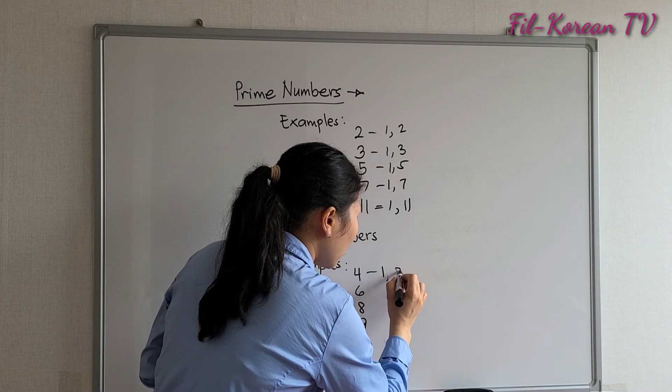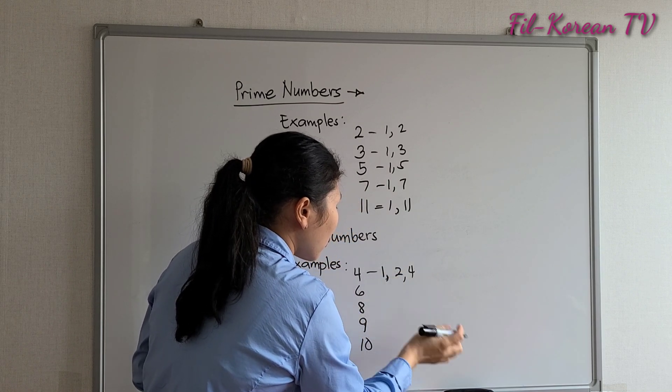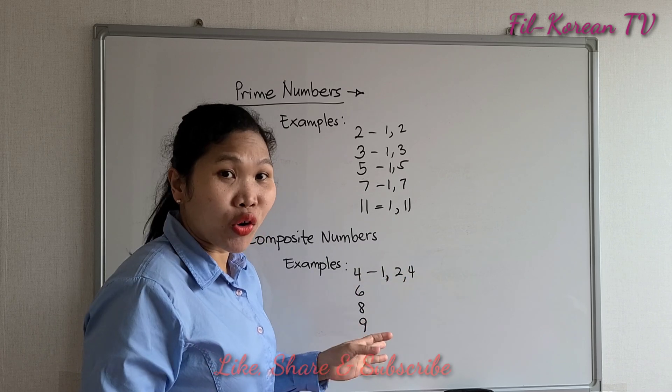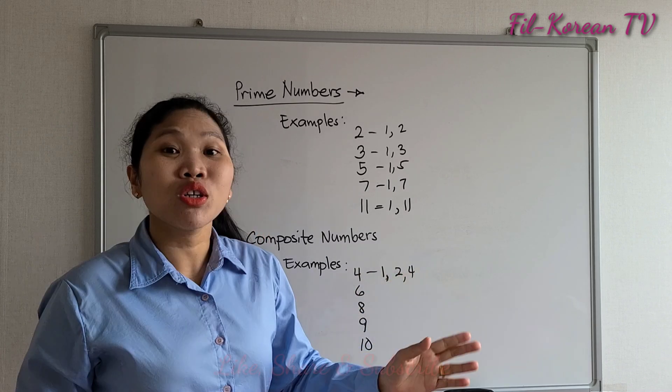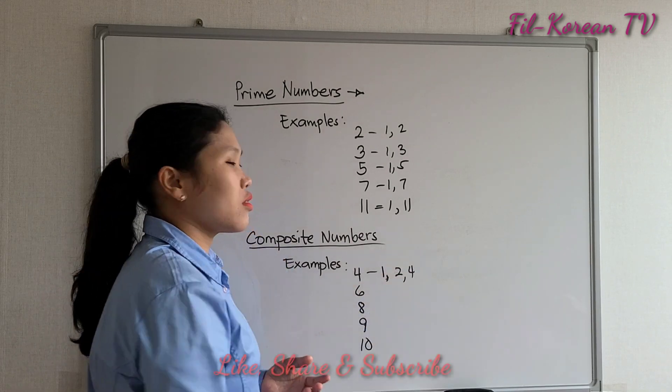Four has more than two factors. The factors are one, two, and four. One times four equals four. Two times two equals four. So, one, two, three—more than two factors. Composite numbers.